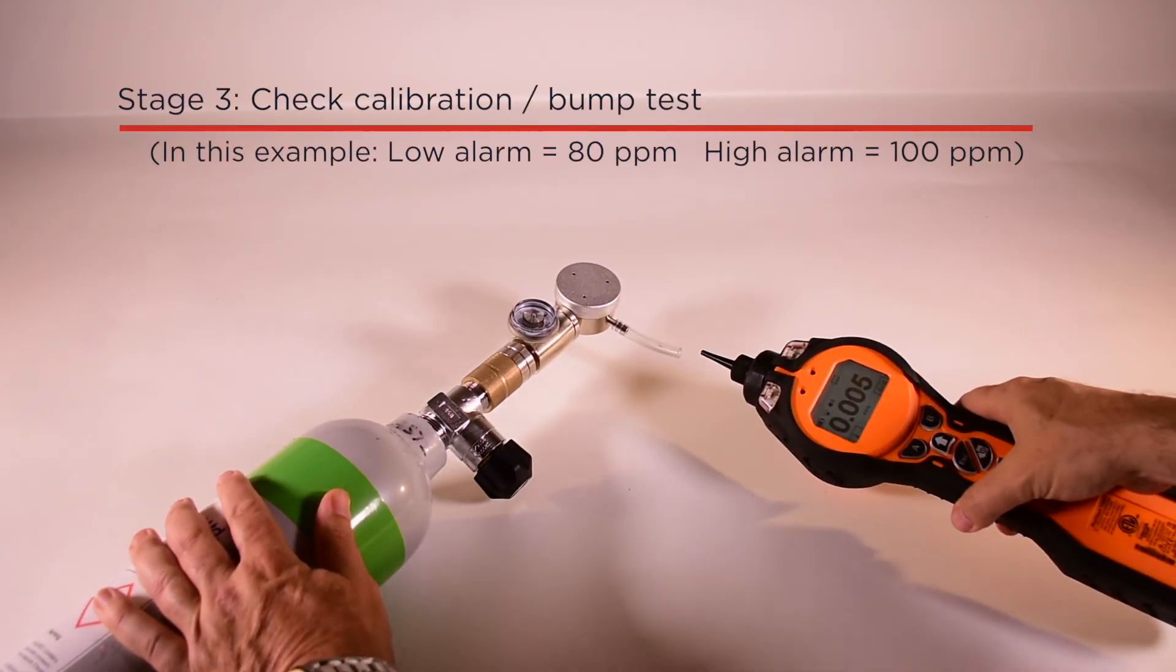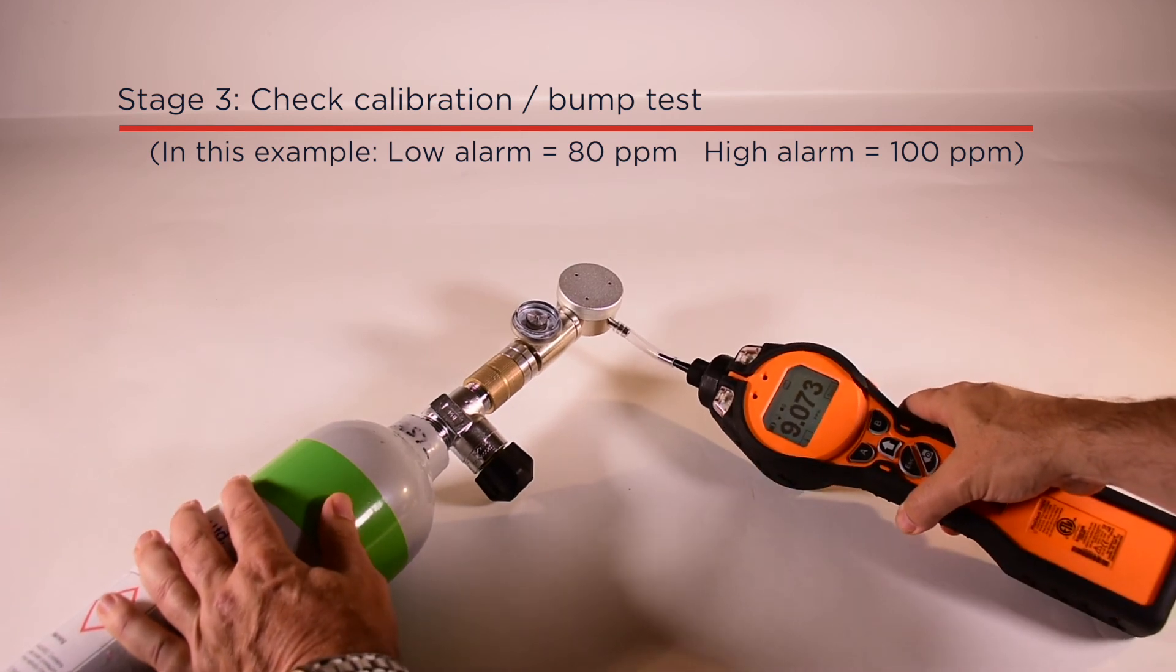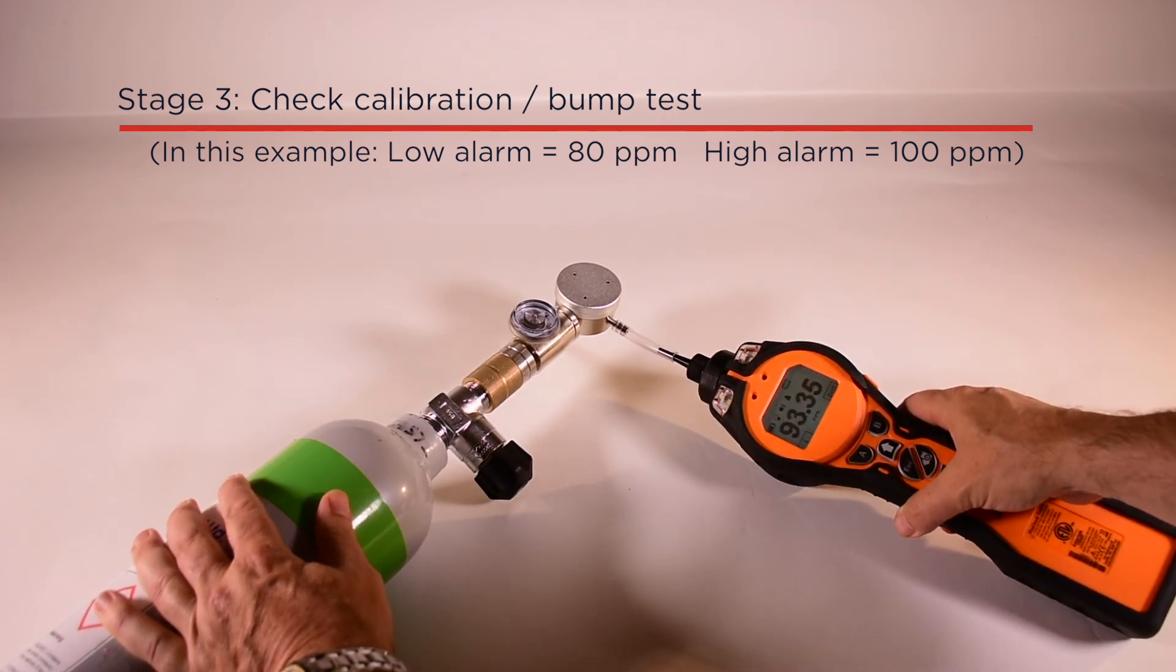Always bump test your TIGER instrument after calibration to ensure the reading and alarms are working correctly. In this example, the low alarm is set to 80 parts per million and the upper alarm to 100 parts per million.